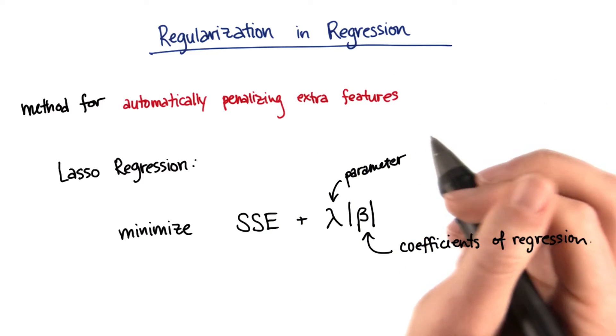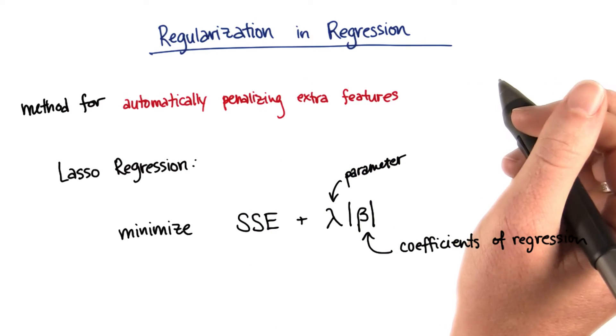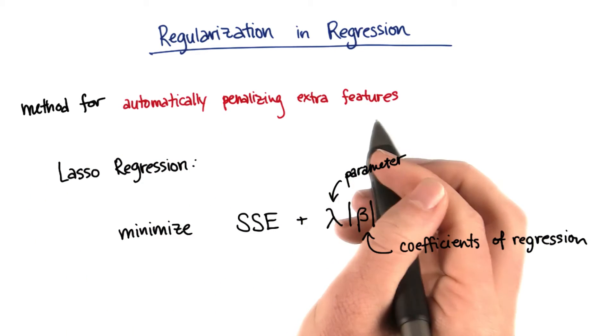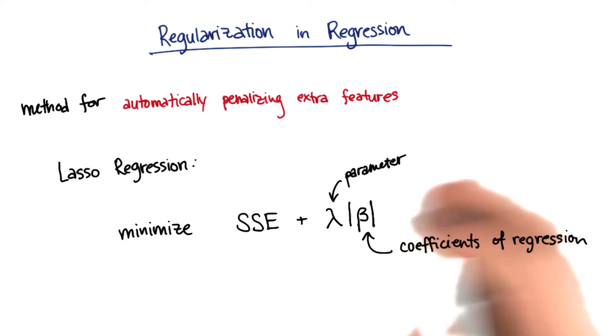One very powerful place that you can use regularization is in regression. Regularization is a method for automatically penalizing the extra features that you use in your model. Let me make this more concrete.